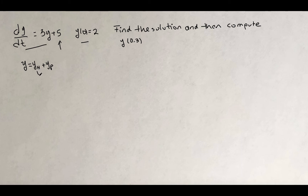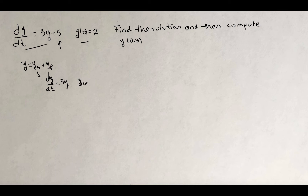The solution of the homogeneous is the solution of the differential equation that we get when we make the non-homogeneous part equal to 0. That means the solution of the homogeneous is c times e to the 3t.